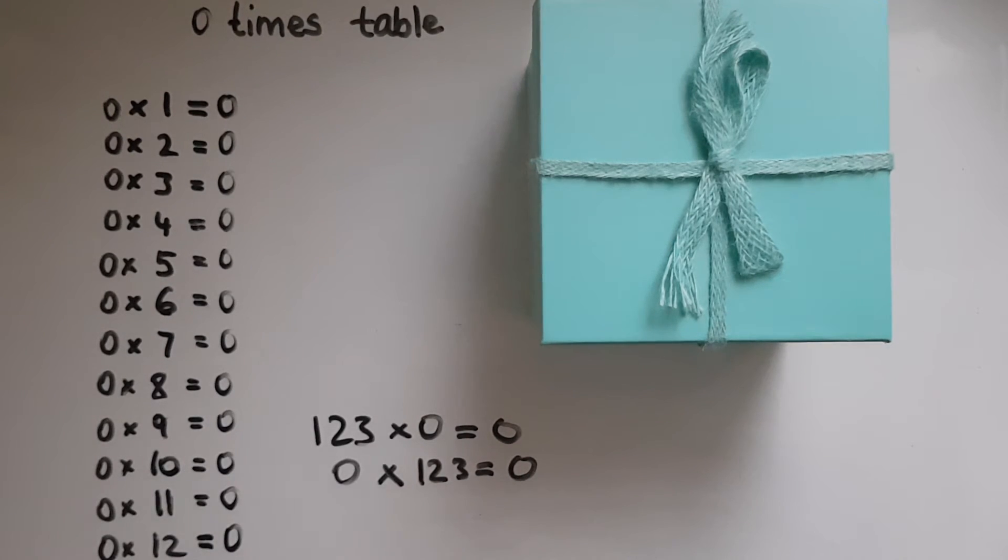So no matter the order you multiply by zero, the answer will be zero.